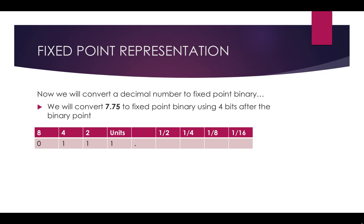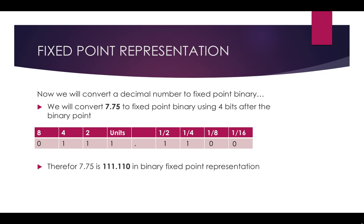Now we work out the right hand side — the fractional part. We've got 0.75. Can we take away 0.5 from 0.75? Yes, so we put a 1 under the half column. 0.75 minus 0.5 leaves 0.25. Does 0.25 (a quarter) go into 0.25? Yes, so we put a 1 there, leaving 0. So we put 0 under the 1 over 8 column and 0 under the 1 over 16 column. We've got 0111.1100.